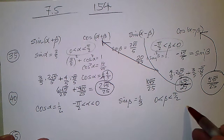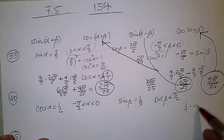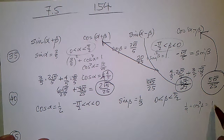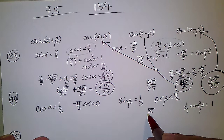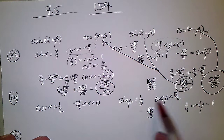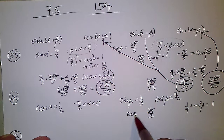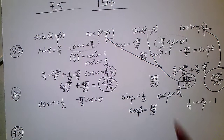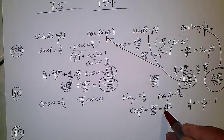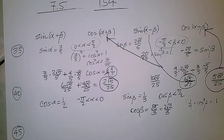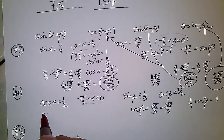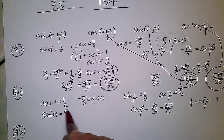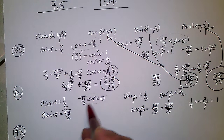Cosine of beta is the square root of 8 over 3, and since we're in the first quadrant it's positive. That can also be written as 2√2 over 3. Since cosine of alpha is 1/2, that's a special angle, so sine of alpha is √3 over 2. But in the fourth quadrant, it's negative.